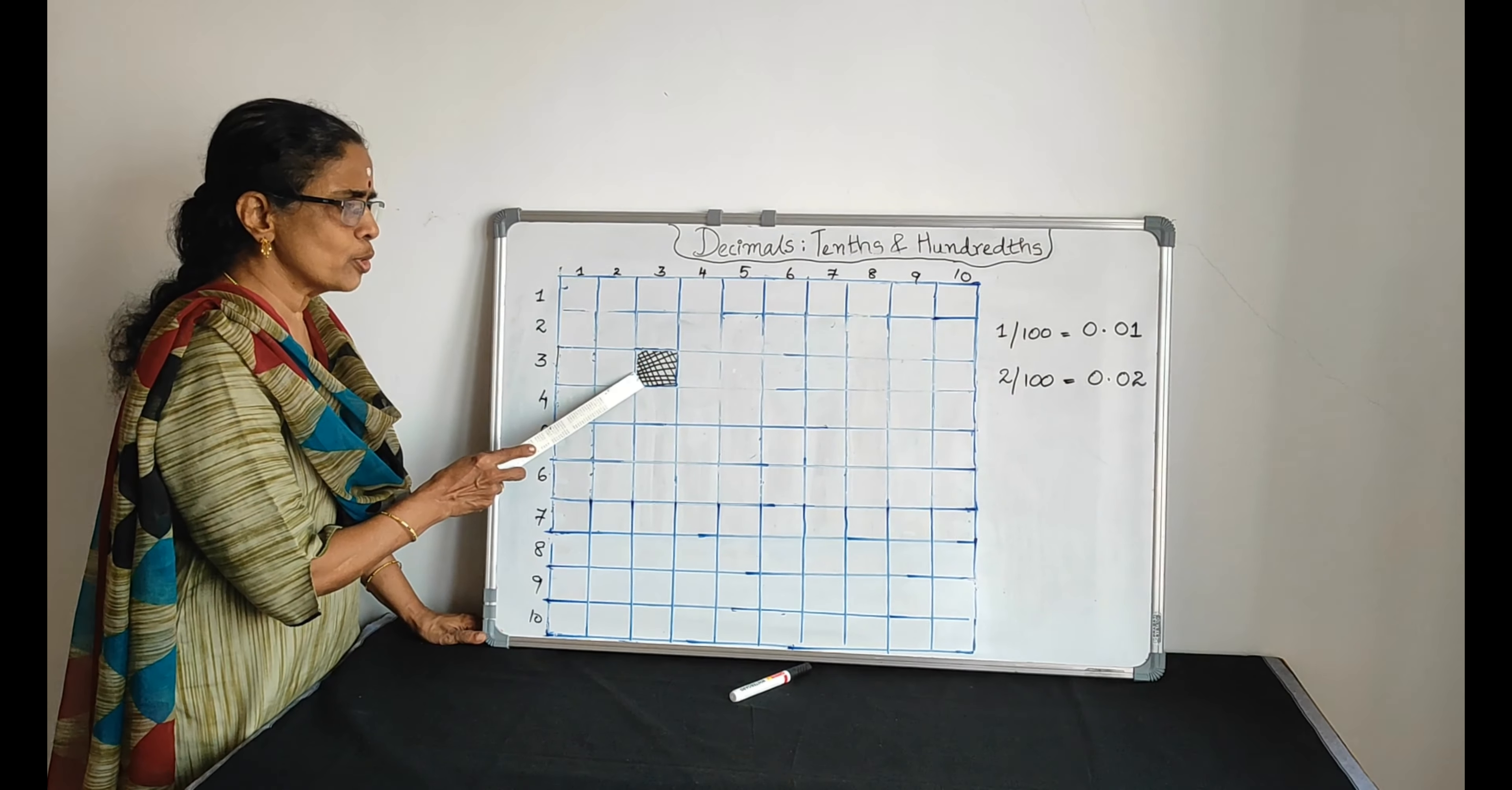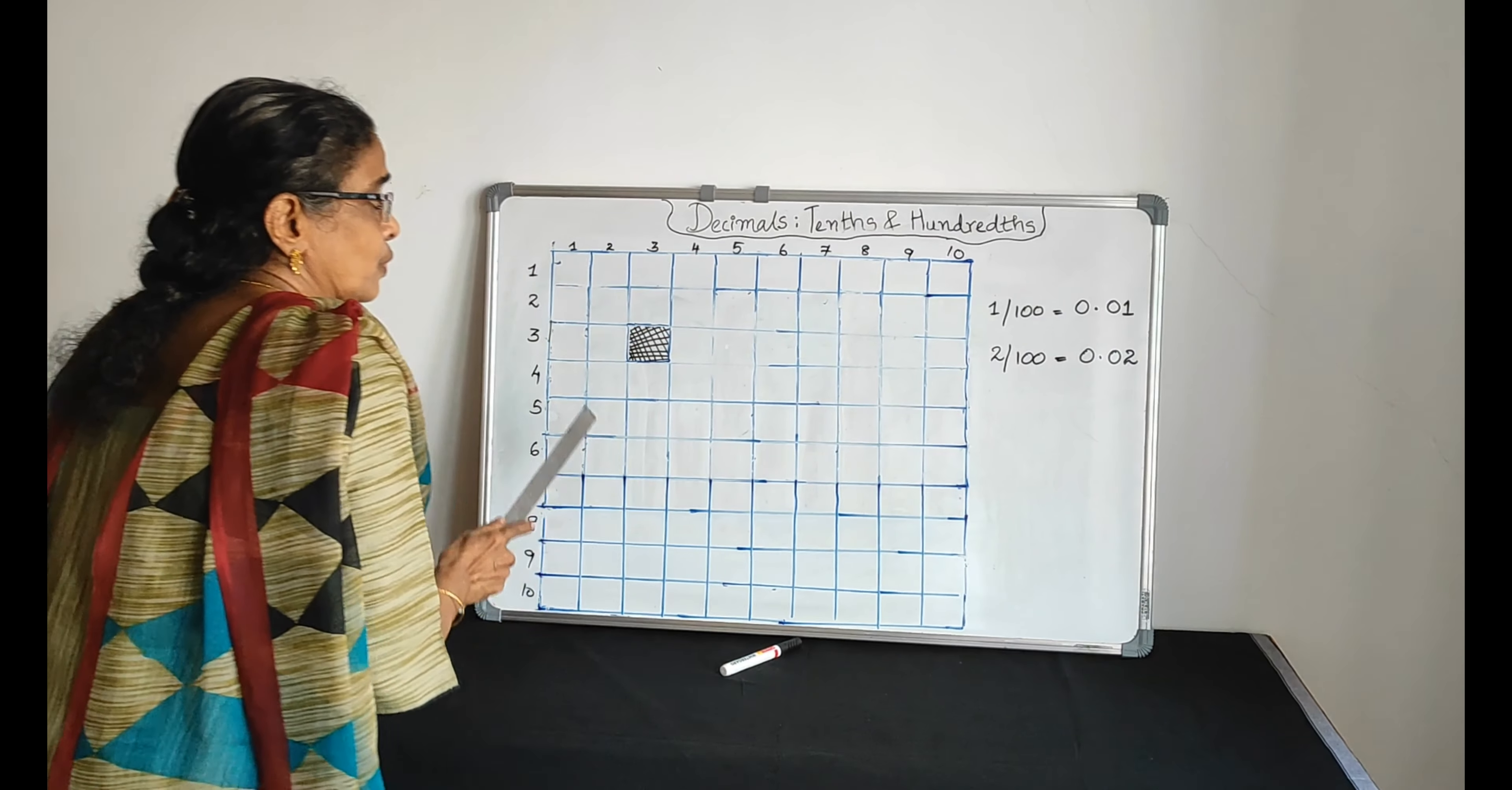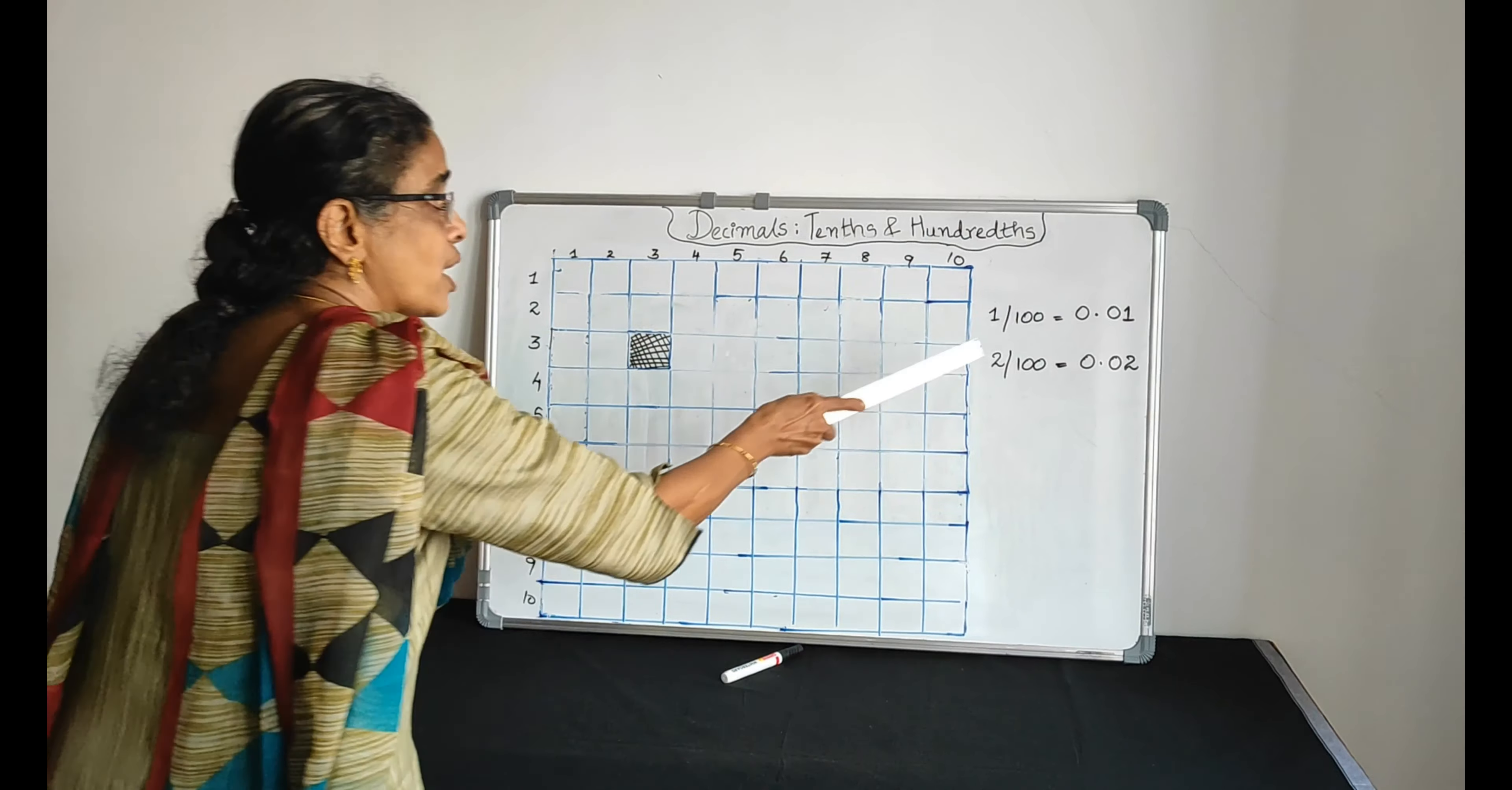And how many parts are shaded? Only one portion is shaded. One out of hundred. We have shaded only one portion, which is equal to 1/100. And it represents 0.01. That means one hundredth.